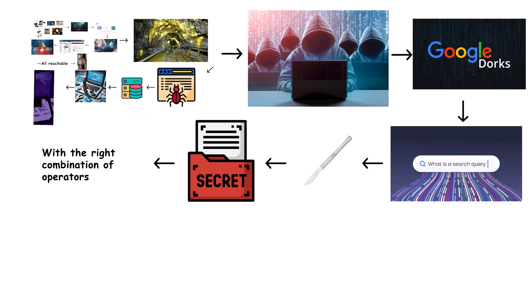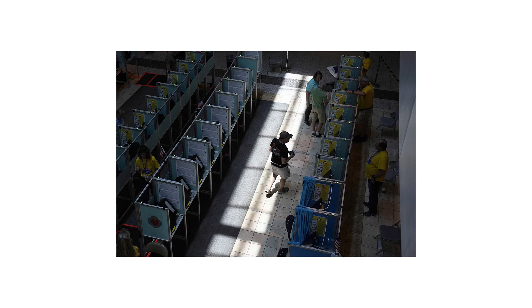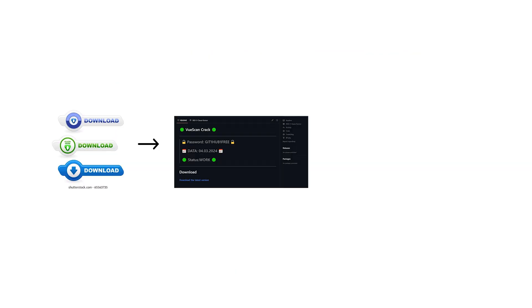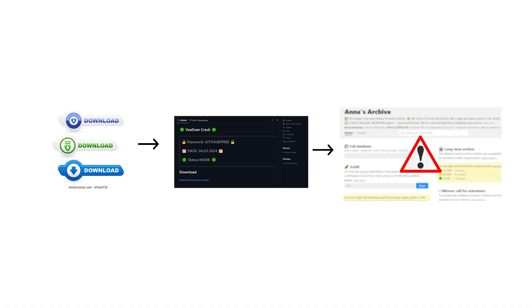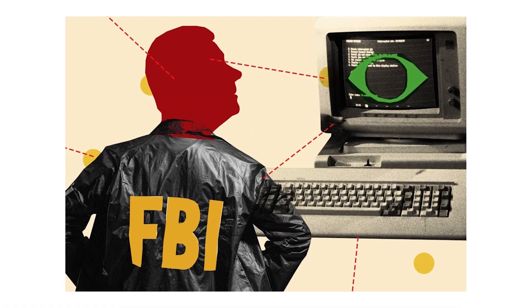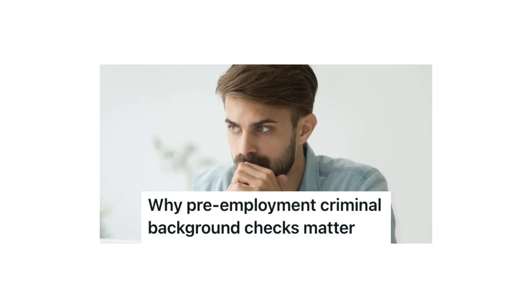With the right combination of operators — like 'filetype:xls password' or 'intitle:index of confidential' — the Bergeweb spills open like a cracked safe. It's also home to semi-legal gray zones, warez sites, cracked software hubs, and mirrored archives of banned or copyrighted content. Not dark enough to draw the FBI's attention, but shady enough to vanish if you mention them on Reddit.